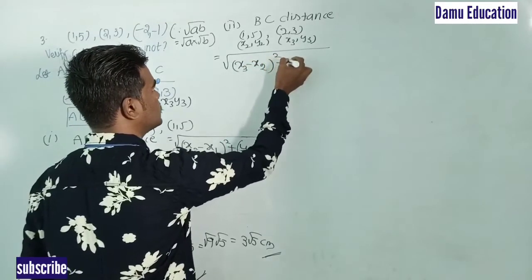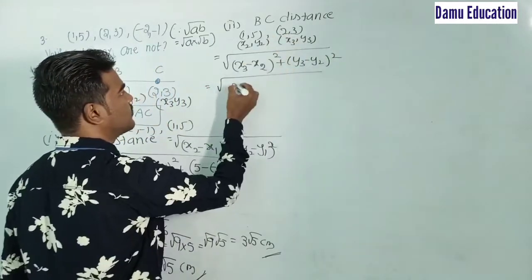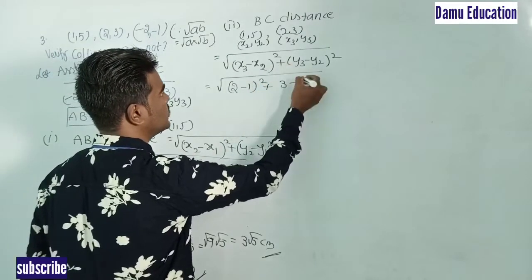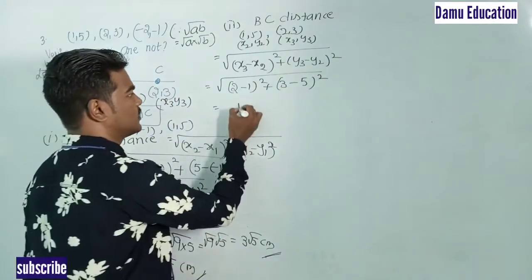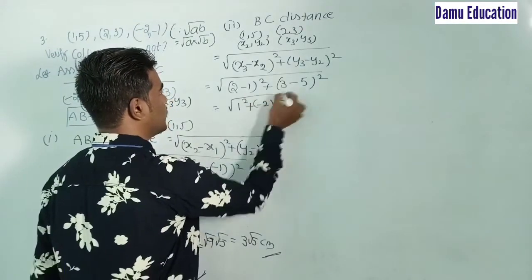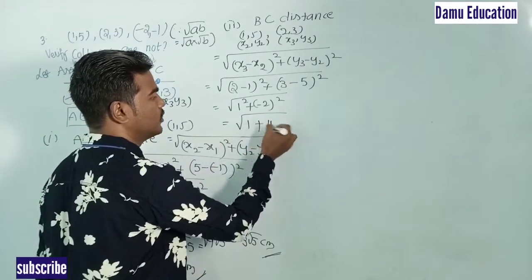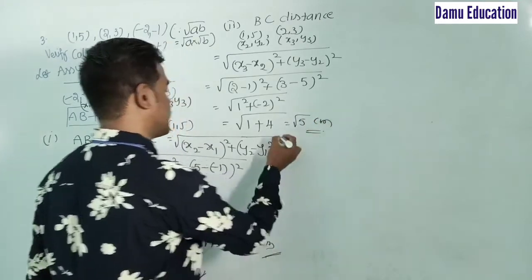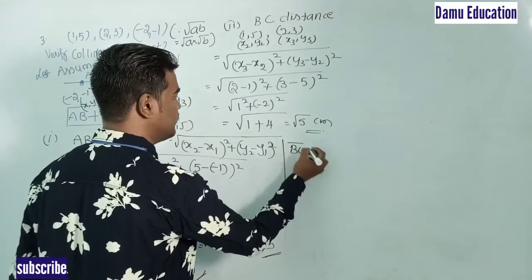Substituting: x3 = 2, x2 = 1, so (2 − 1)² = 1² = 1. And y3 = 3, y2 = 5, so (3 − 5)² = (−2)² = 4. Therefore BC = √(1 + 4) = √5 centimeters.